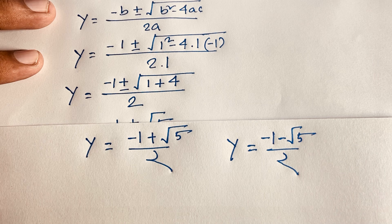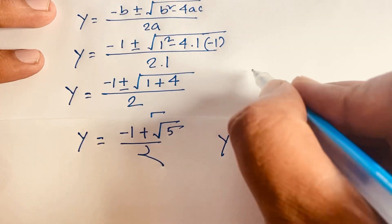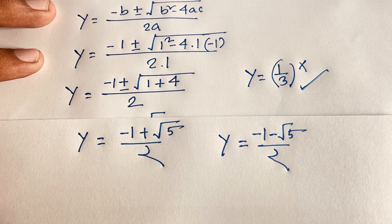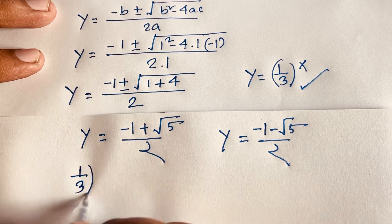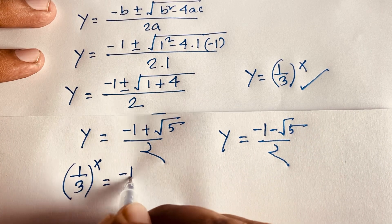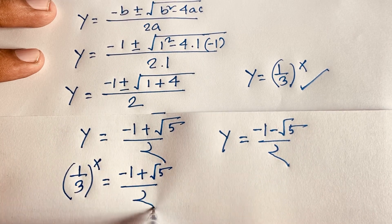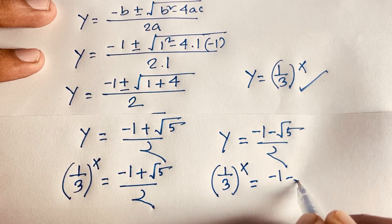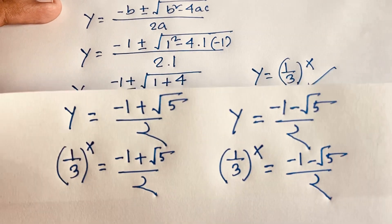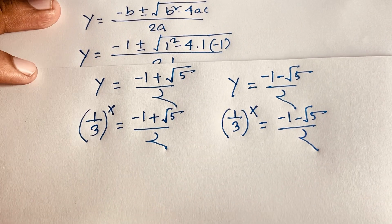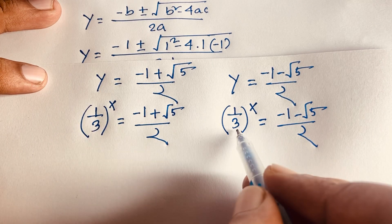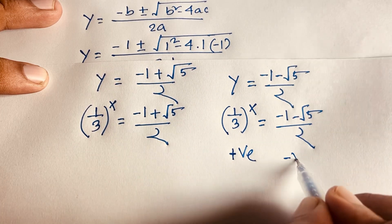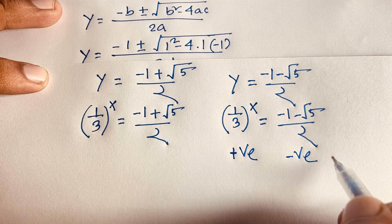Recall that y equals (1/3) to the power x. If we substitute the second value, (1/3) to the power x equals (negative 1 minus square root of 5) over 2. But (1/3) to the power x is always positive, and this second value is always negative — so positive cannot equal negative. Therefore, this solution is rejected.